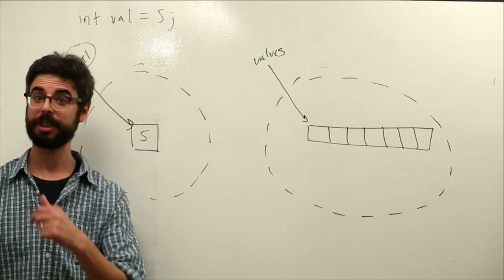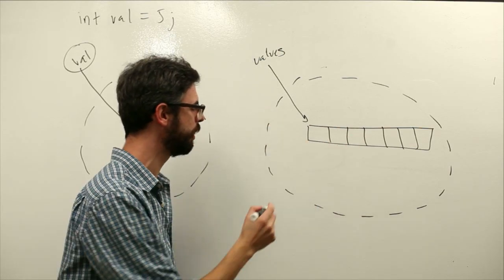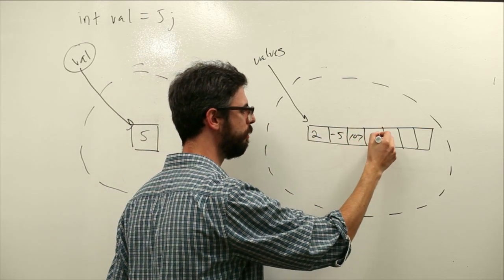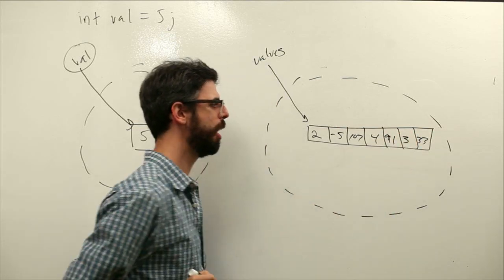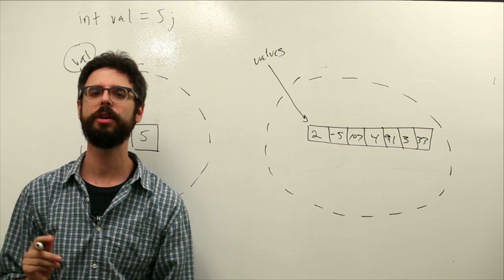I'm going to name it values. And what I want values to be is a list of all these numbers: 2, negative 5, 107, 4, 91, 3, 33. So values is a list of all those numbers.